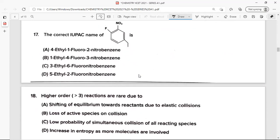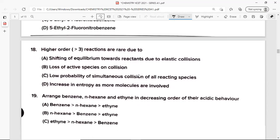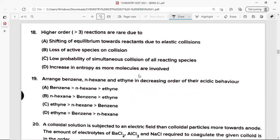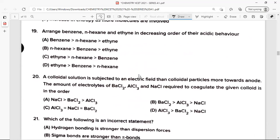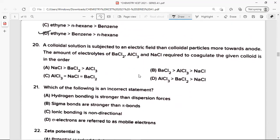The IUPAC name of the given compound is option A, that is 4-ethyl-1-fluoro-2-nitrobenzene. Question 18: Higher order, that is greater than 3, reactions are rare due to option C, low probability of simultaneous collision of all reactive species. Question 19: Arrange benzene, n-hexane, and ethyne in decreasing order of their acidic behavior. It's option D, ethyne greater than benzene greater than n-hexane. Question 20: A colloidal solution is subjected to an electric field and colloidal particles move towards anode. The amount of electrolytes of BaCl2, AlCl3, and NaCl required to coagulate the given colloid is in the order option A, NaCl greater than BaCl2 greater than AlCl3.